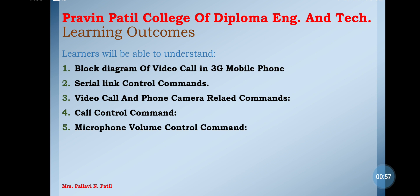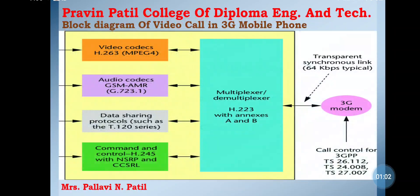Let's see the first block diagram of video call in a 3G mobile phone. The mobile phone has nowadays become a necessity for individuals. Mobiles are becoming smarter and interfacing with all services and the internet has become necessary. The increased data rate in GSM networks allows users to use video calling and camera related applications, which have now become an integral part of the mobile. In this practical, we will execute different advanced features of 3G and 4G networks like video call and phone camera commands.